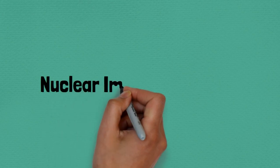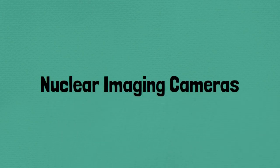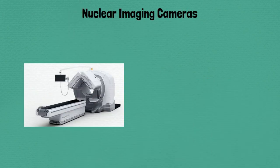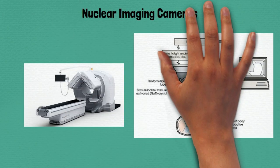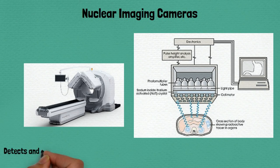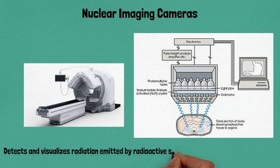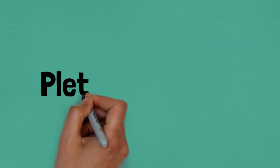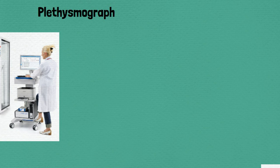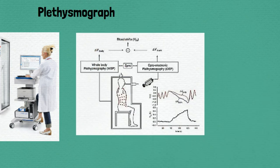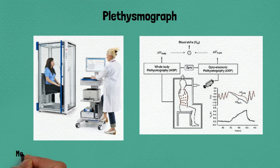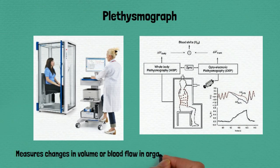Ninety-two: nuclear imaging cameras, detects and visualizes radiation emitted by radioactive substances for diagnostic imaging. Ninety-three: plethysmograph, measures changes in volume or blood flow in organs or tissues for diagnostic purposes.